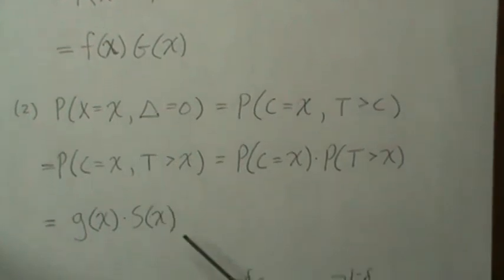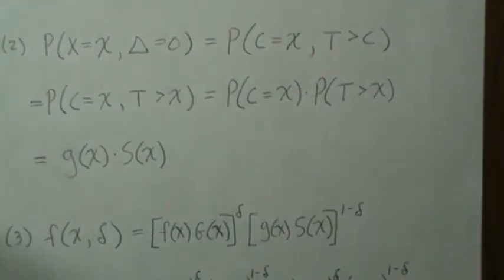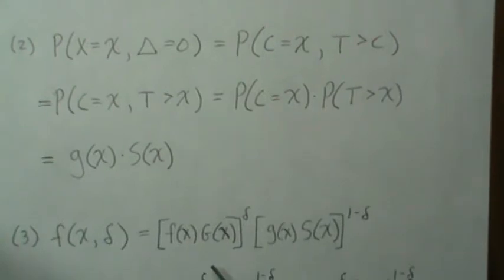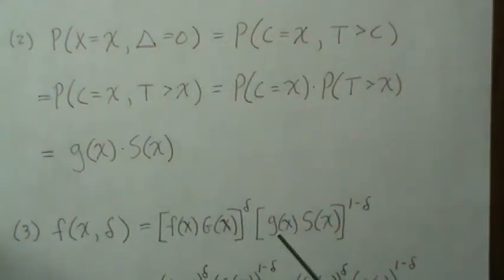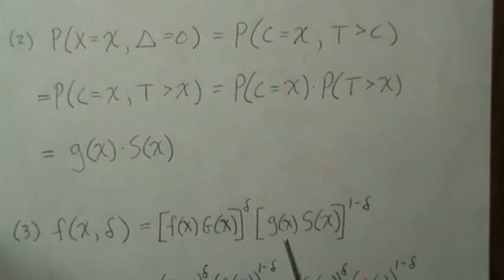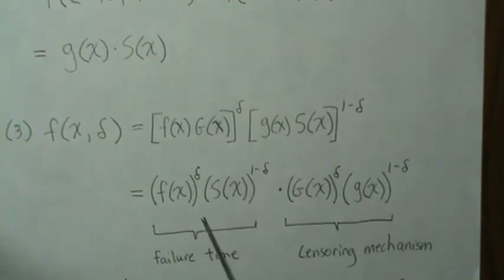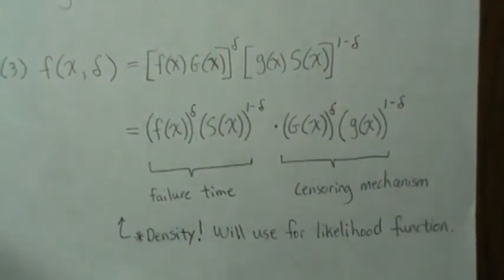So with these two pieces of information, we can write down the density for our observed data. When delta is 1, we're in this setting. And when delta is 0, this drops out and we're in this other setting. So this is the density. We can rearrange this — this part has to do with the failure times, and this is the censoring mechanism. Putting those two pieces together, we get the density separated into the failure time component and the censoring mechanism component. This is the true density of our observed data.